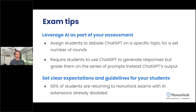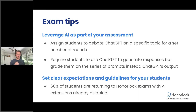We have a feature where we block specific extensions that could be used for cheating, including ChatGPT and other AI chatbot extensions. When we introduced the feature, students would show up for an exam, we would tell them these extensions are being shut down because they're not allowed, and they'd be blocked. Interestingly, when students returned for their next exam, about 60% were already coming back with that extension disabled. What can be pulled from that: when you make clear to students what is and isn't allowed, they come back ready. Students, once they understand what's expected of them, the majority will try to deliver on those expectations.